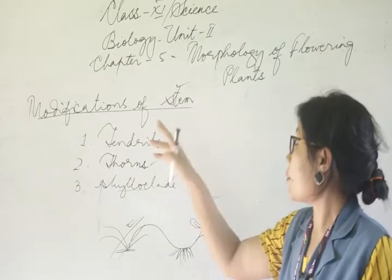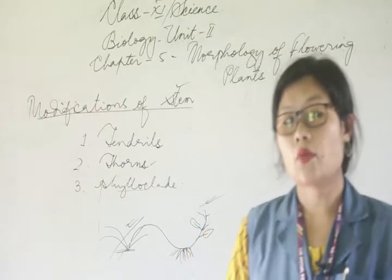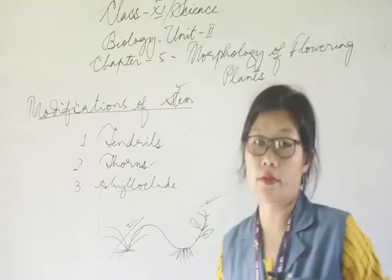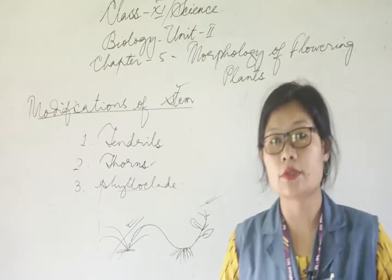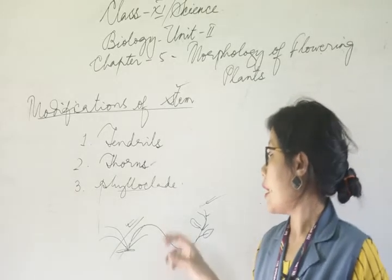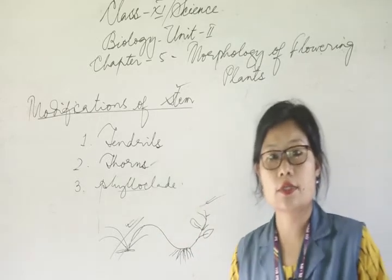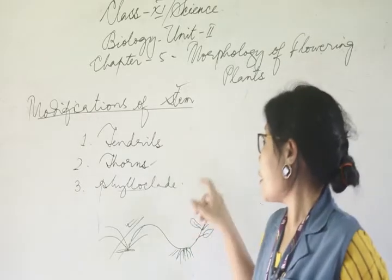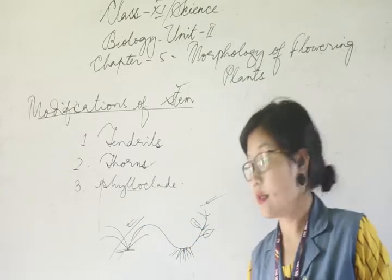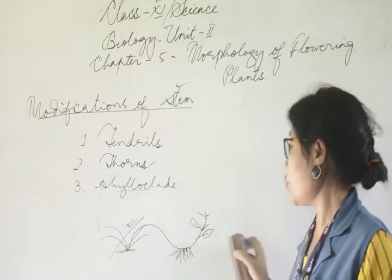So these are the modifications of the stem: tendrils help in climbing to the support; thorns help in preventing browsing animals; phylloclade — stem is modified into a leaf-like structure to synthesize food. And in some cases, stems are responsible for vegetative propagation to the new habitat.